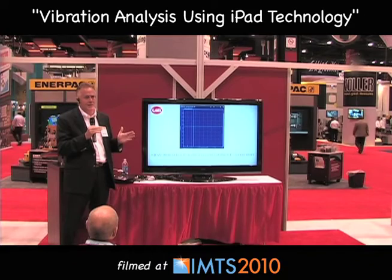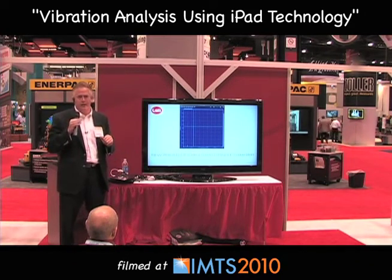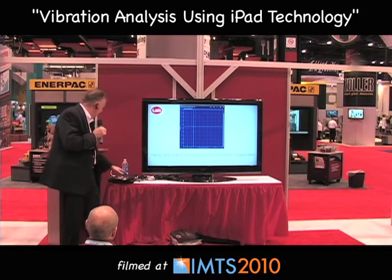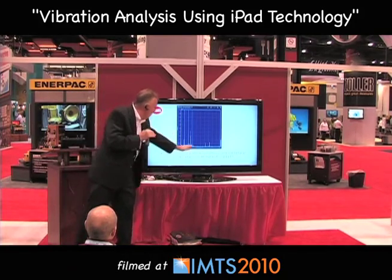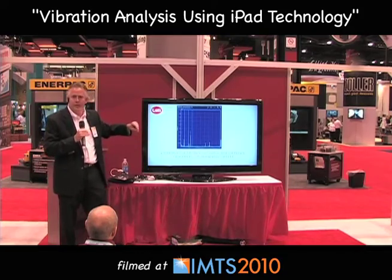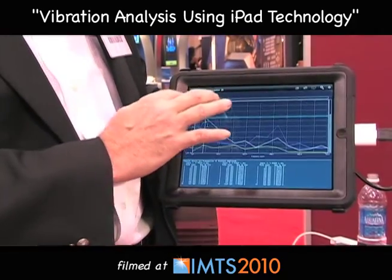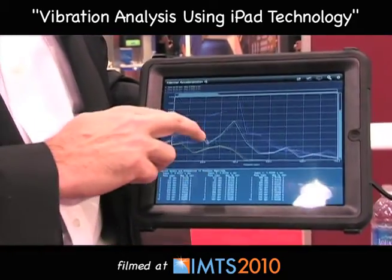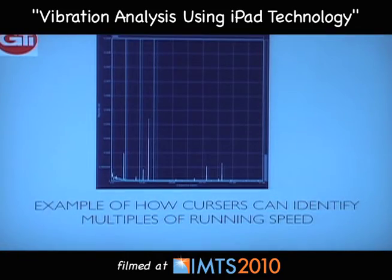On a traditional analyzer, you have to pick a specific window — for example, between 5k hertz and 10k hertz. With this analyzer, we're able to capture all the way up to 24k hertz, and then just by touch technology we can pinch our fingers in and out to zoom into the area we're interested in. So you get the whole picture and then you can hone in on your bearing frequencies, running speed, and so forth.